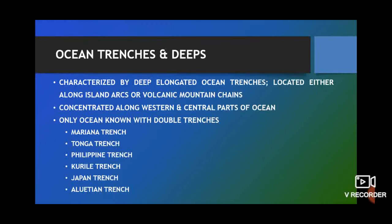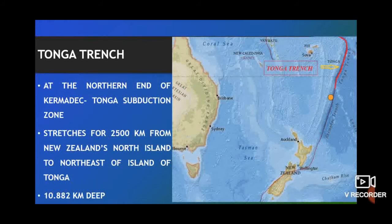The Pacific Ocean is characterized by deep and elongated ocean trenches, located either along the island arcs or near volcanic mountain chains. So far, 32 deeps or trenches have been found in the ocean, and most are concentrated along the western and central parts. The Pacific Ocean is the only ocean known to have double trenches. The Tonga Trench is found at the northern end of the Kermadec-Tonga subduction zone, stretching 2,500 kilometers from north of New Zealand to the northeast of the island of Tonga, with its deepest point at 10.882 kilometers depth.